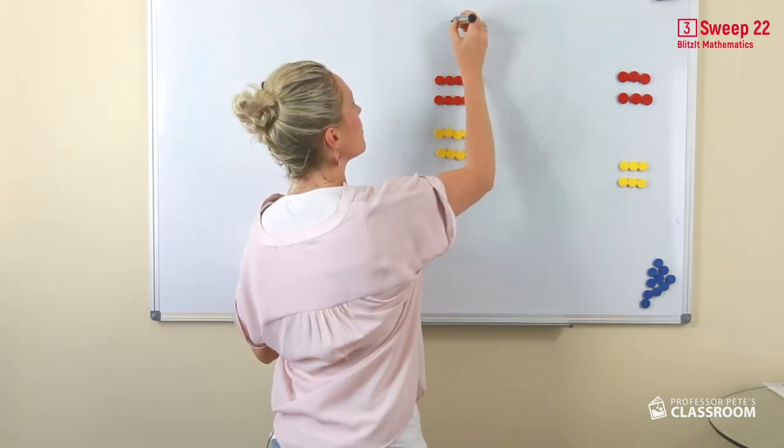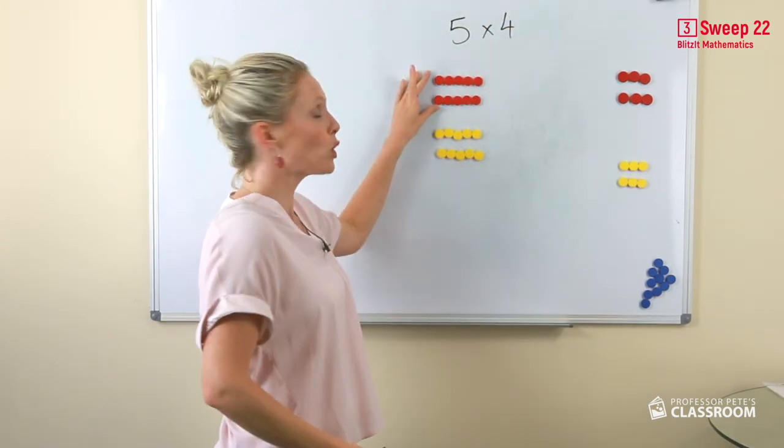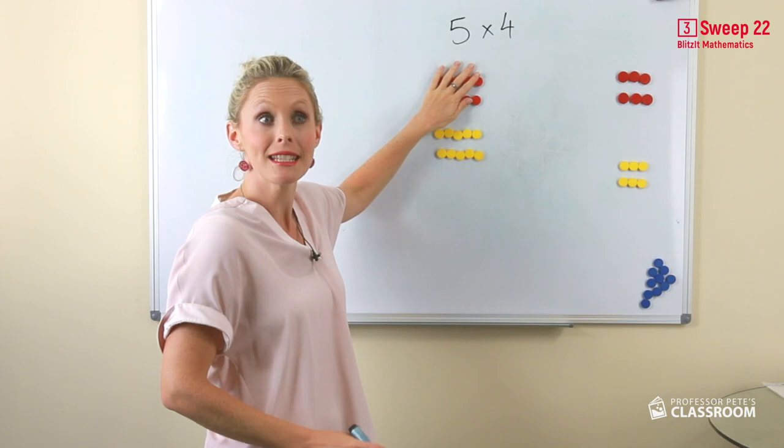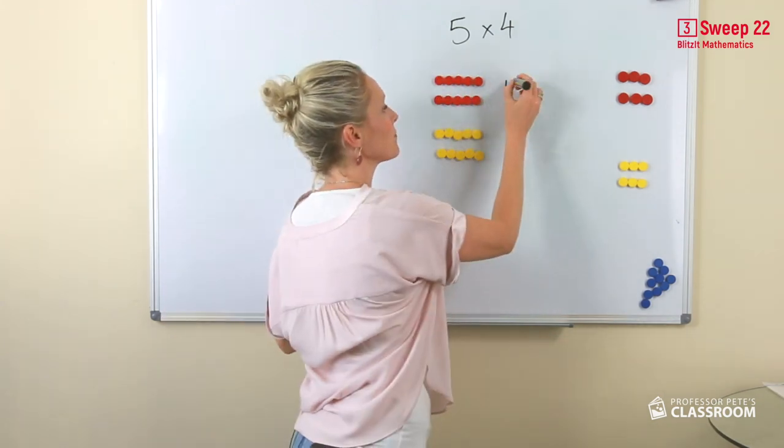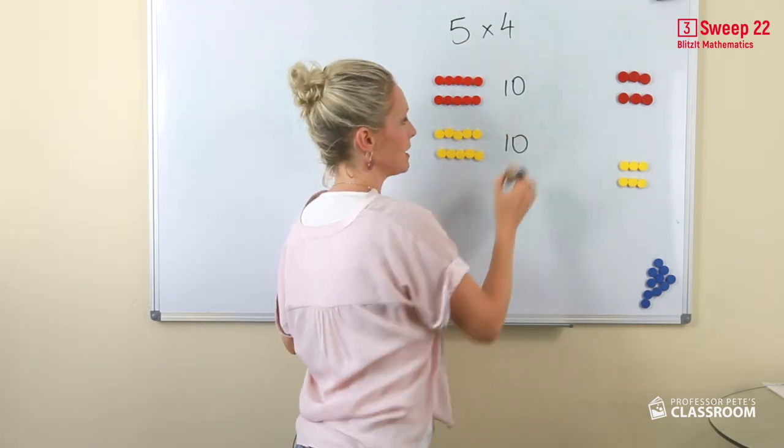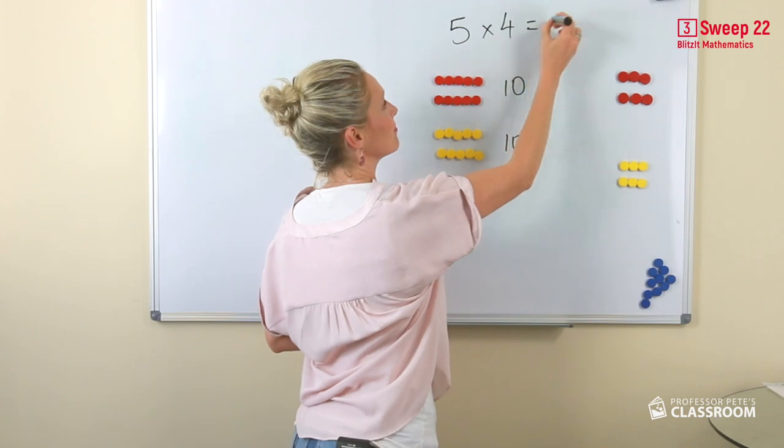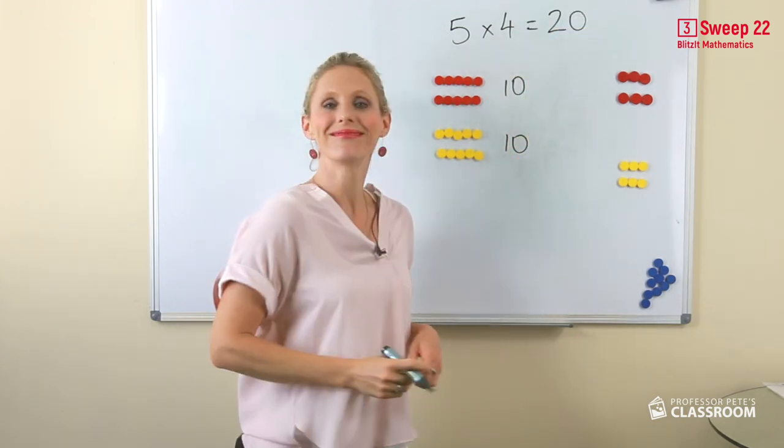So if we have five times four, two groups of five is ten. Another two groups of five is ten. Now we know two tens equals 20.